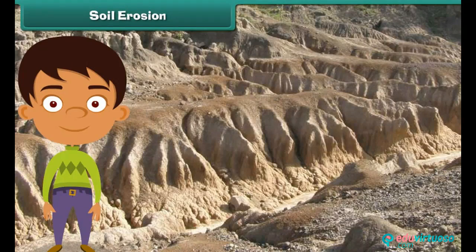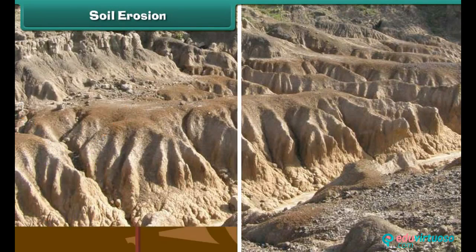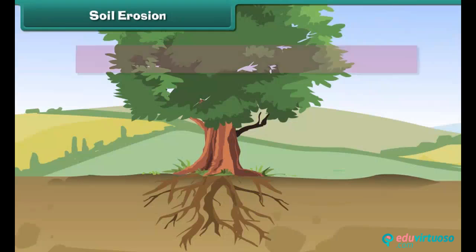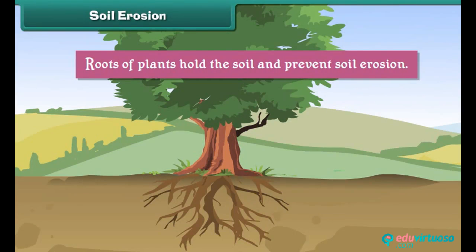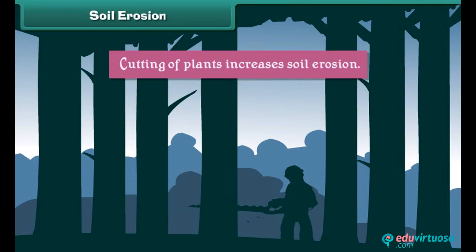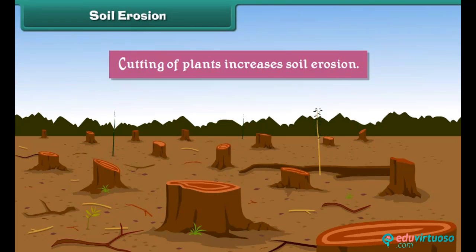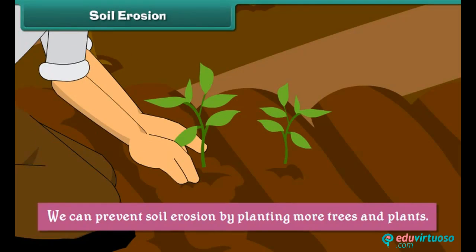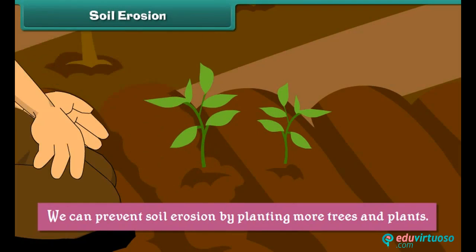Soil erosion. Soil erosion is the removal and transfer of soil by wind and water. Roots of plants hold the soil and prevent soil erosion. Cutting of plants increases soil erosion. We can prevent soil erosion by planting more trees and plants.